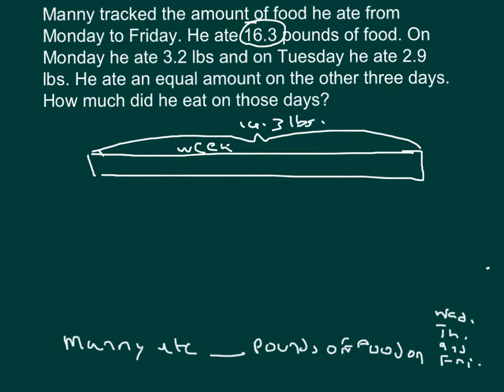This is the food for the week. And that's the food over the full week, 16.3 pounds. And we know that on Monday, it was 3.2 pounds. It's Monday, which was 3.2 pounds. And for Tuesday, 2.9.